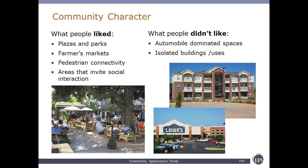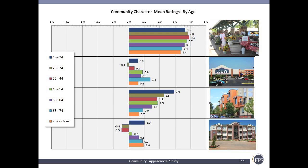Community character: people like parks and plazas — they are looking for places to come and connect in the civic realm, whether it's parks, farmer's markets, or areas that invite social interaction with pedestrian connectivity. Those all score very strong. Where you have automobile-dominated spaces and isolated buildings, those images ranked much lower. There's a meeting of the minds around farmer's markets, community gardens, and plazas — people coalesce around them, making them a great way to get people to cross paths.